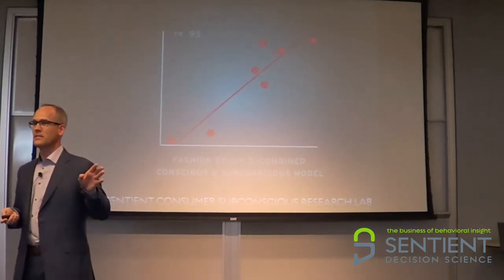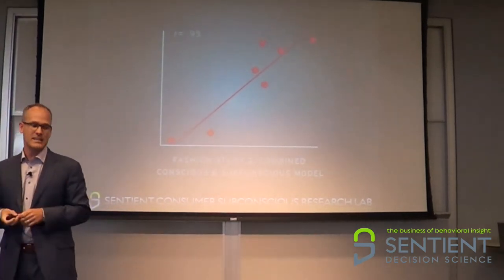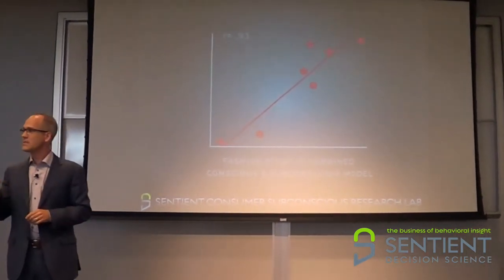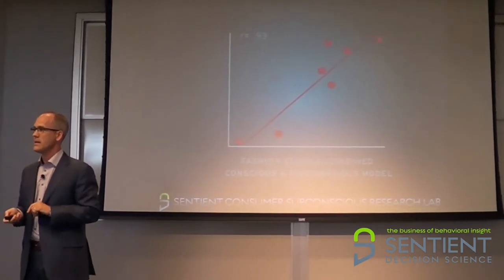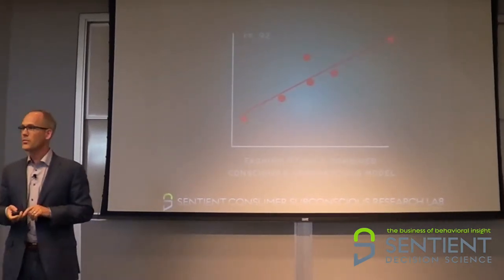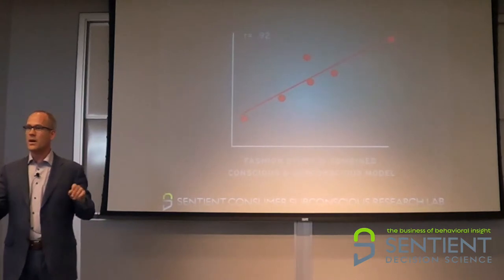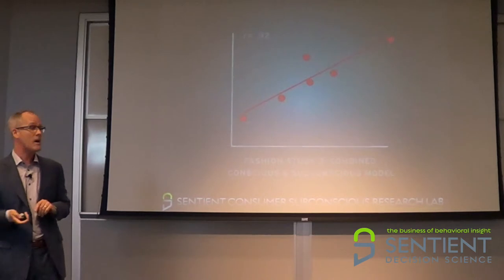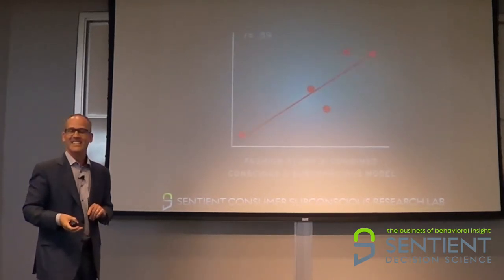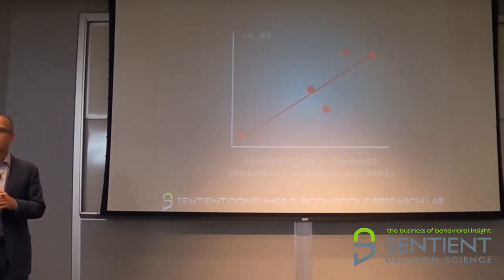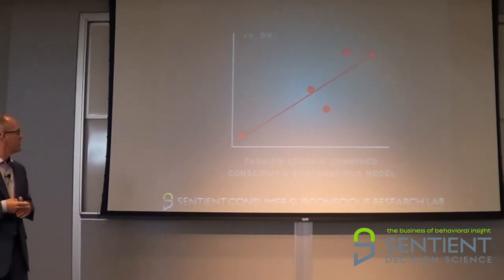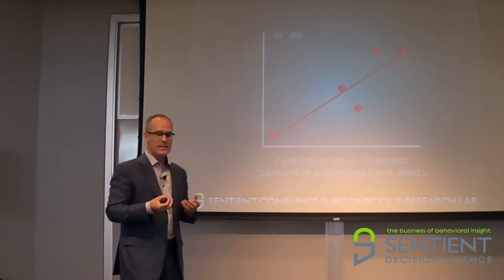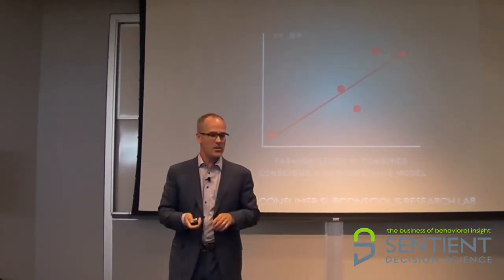Here's fashion study number two — was that just a fluke? We did it on a different line of products. The R is 0.93. That's combined conscious and subconscious data. Fashion study number three: combined subconscious and conscious data, R of 0.92. Just to show you it's not always 0.9 — here is study number four: R of 0.89. When we present that, a lot of people ask us, well, fashion is very emotional — does this work for other categories?